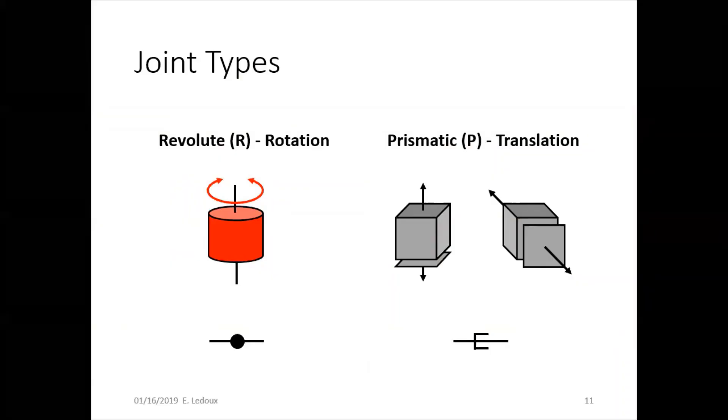There are two types of joints that robots have. Revolute is rotation, when you have a motor. Prismatic is translation, and that is when you have hydraulic or pneumatic cylinders. You can see them here in three dimensions and two dimensions and how they would be abbreviated.